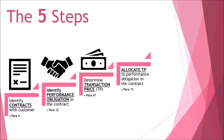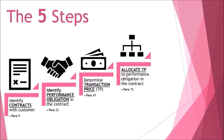Step number four: allocate the transaction price to the performance obligations. Generally, the entity allocates the transaction price to each performance obligation on the basis of the relative standalone selling price. For example, if a contract has two obligations — transfer of goods and transfer of service — they are separately identifiable and the price is allocated to both. If the standalone selling price is not observable, the entity needs to estimate it.